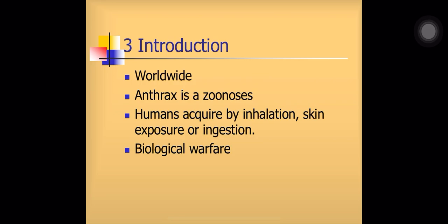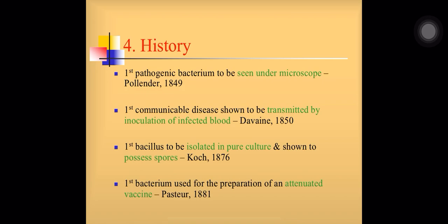Anthrax is worldwide. Human beings can acquire this disease accidentally when they come in contact with animals by inhalation, skin contact, or by ingestion. This disease has also been used in biological warfare. Bacillus anthracis has important historical significance: it is the first pathogenic bacterium to be seen under the microscope, the first communicable disease shown to be transmitted by inoculation of infected blood, the first Bacillus isolated in pure culture shown to possess spores, and the first bacterium used for preparation of an attenuated vaccine.